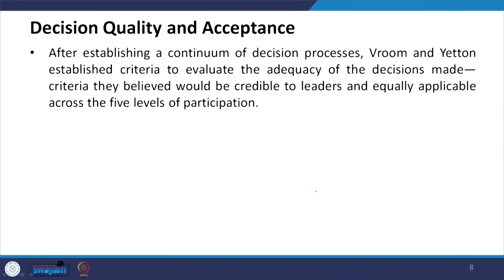When discussing decision quality and acceptance, after establishing the continuum of decision processes, Vroom and Yetton established criteria to evaluate the adequacy of the decisions made. They believed these criteria would be credible to leaders and equally applicable across all five levels of participation.